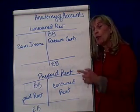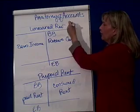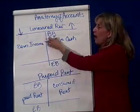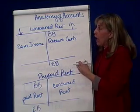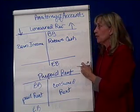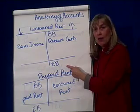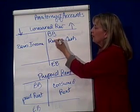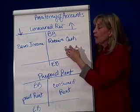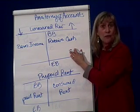For example, we know that unearned revenue is a liability account, and liability accounts are increased by credits and decreased by debits. So if I look at all the activity in the unearned revenue account during the period, I would notice it would have a credit beginning balance and a credit ending balance. Whenever I received money, it would show up as a credit here — this is all the cash I received from folks who gave me money before I did anything for them.